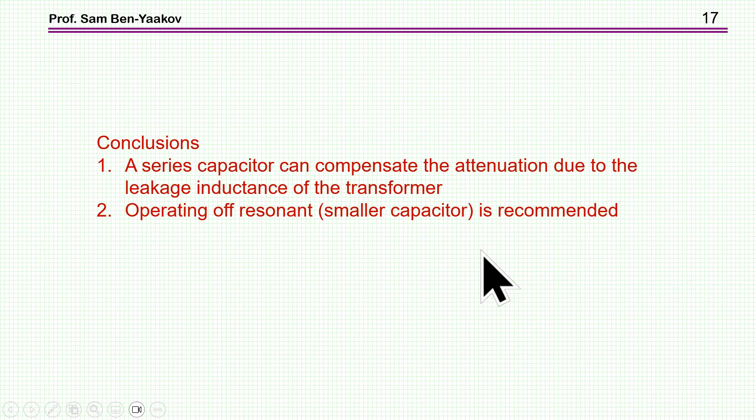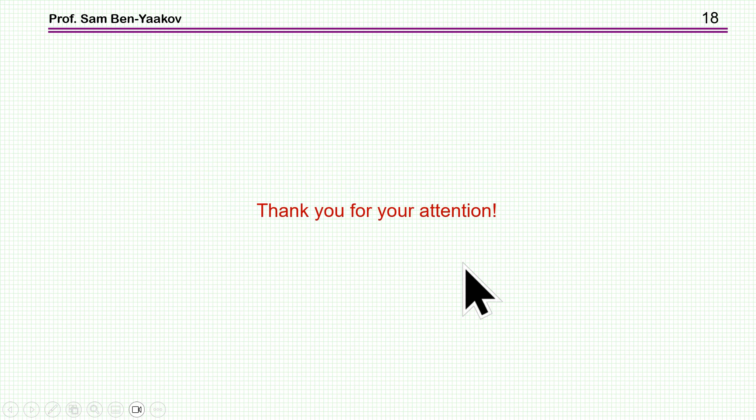What are the conclusions here? First, we see that a series capacitor can indeed compensate the attenuation due to the leakage inductance of the transformer, that is, the voltage drop as the load current is increasing. Also, operating off resonant with a smaller capacitor is a good idea. Does not seem to cause any problem, but it's also protecting the circuit against these parasitic oscillations. I should add that, in my opinion, having a capacitor which is larger may not be a good idea, because if the capacitor is larger than resonant, then you might have hard switching, or harder switching, than you have at resonant or below resonant. So the losses of the switching transistor, if you use a bridge or half bridge, will be higher. I am not showing it in this presentation, but this is the point to consider.